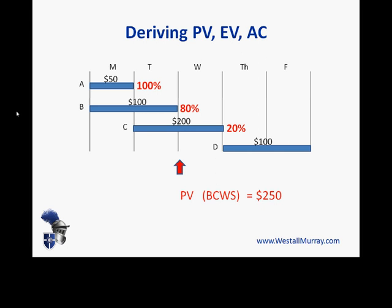Now let's say that, as a result of a progress report, we're told when we get to Tuesday this is what has actually happened. Activity A is indeed 100% complete, but we've only done 80% of Activity B, and only 20% of Activity C. So let's think about our Earned Value. We've completed Activity A, so we've earned $50. We've only done 80% of Activity B, so we've only earned $80 worth of work. Activity C is 20% complete, so we've only earned $40 worth of work. Our total Earned Value is $170.